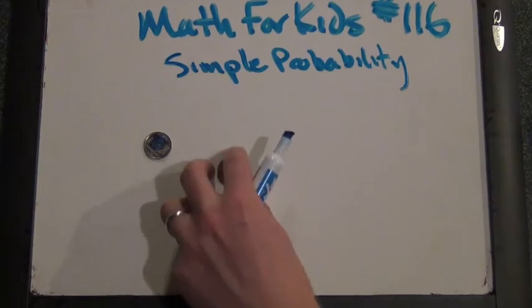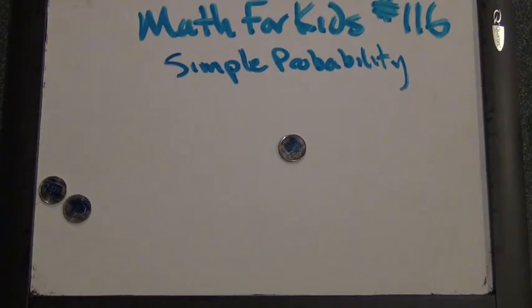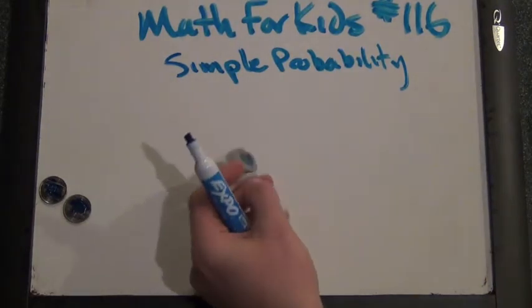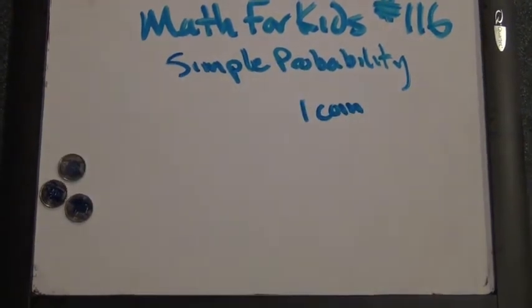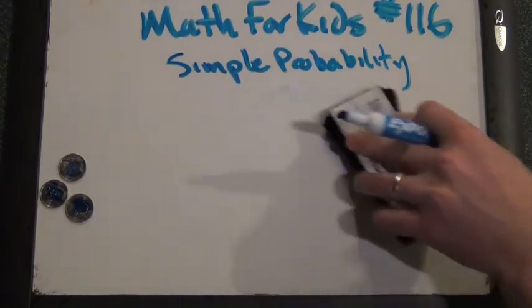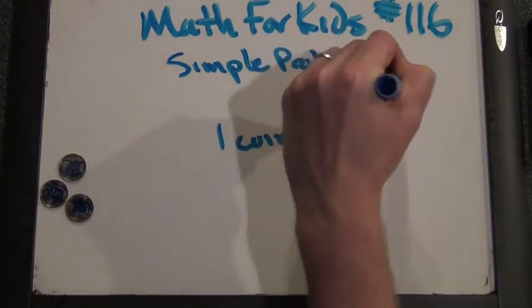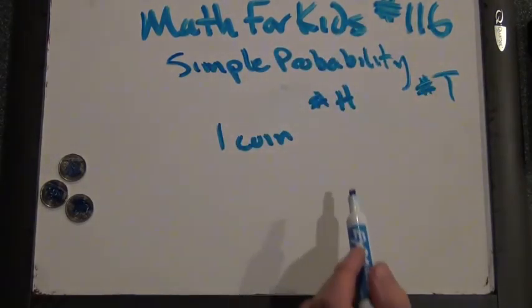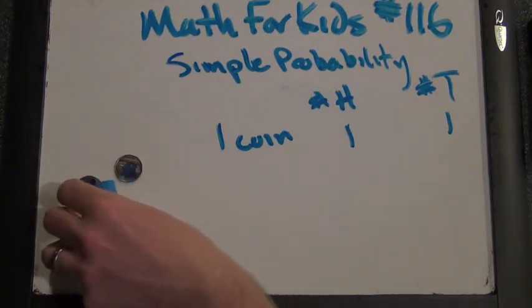So first we're going to see what happens if you flip just one coin. What can happen if you flip one coin? It can land heads or tails. If you flip one coin you can get one head or you can get one tail. And they're both going to occur about the same amount of time. For purposes of our little video, we'll just pretend that half the time it comes up heads, half the time it comes up tails.